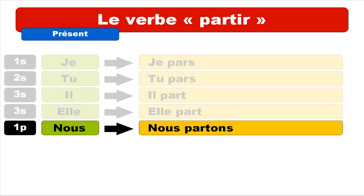So let's see Nous now. First person plural — Nous partons. The final S is not pronounced as usual; you only need to pronounce the nasal sound at the end — O-N, on. Nous partons.